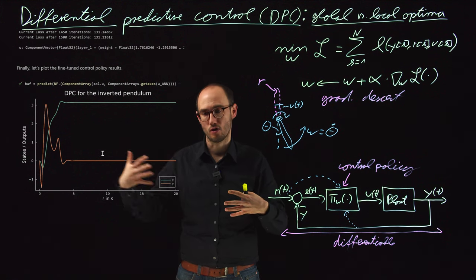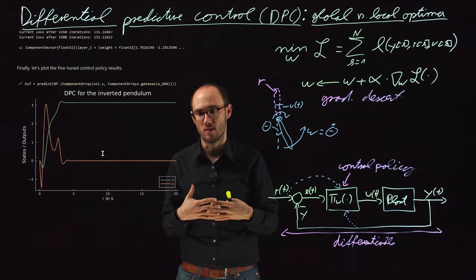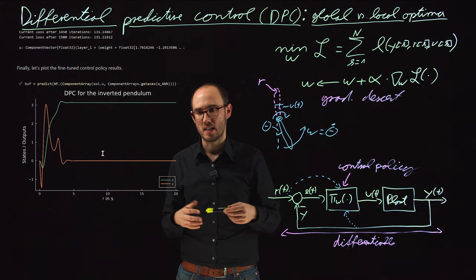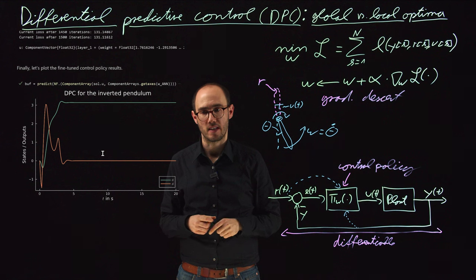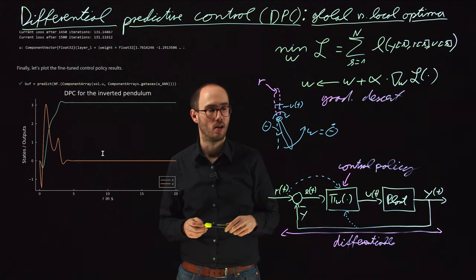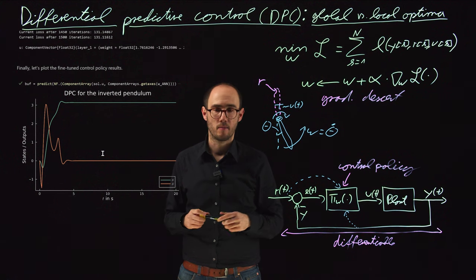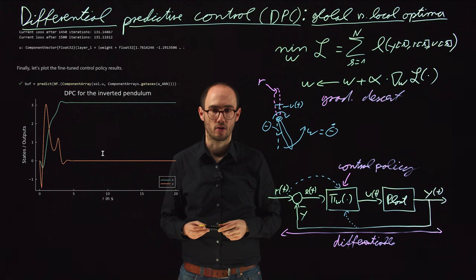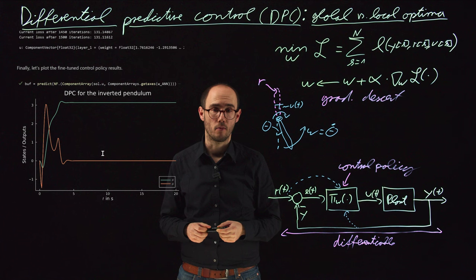This combination of global exploration and local minimization using gradient solvers is a classical and practical solution technique for highly non-linear problems. In the previous video on the Duffing oscillator, we did not need this — that problem was technically non-linear but not as challenging as the pendulum swing-up. It always depends on the specific application which optimization toolchain to apply. For the pendulum case we really needed the big bazooka: combining global and local optimization. With that I'm ending this excursion into differential predictive control, which is essentially the transfer from neural ODE system identification to control. Thank you for watching and see you soon.